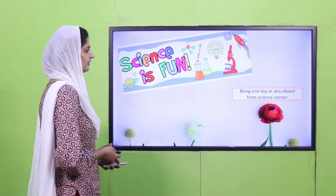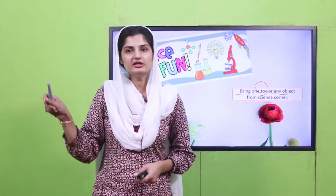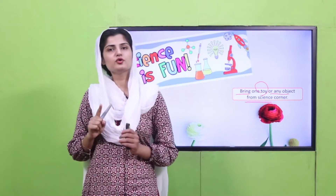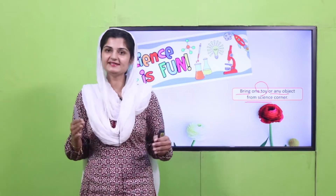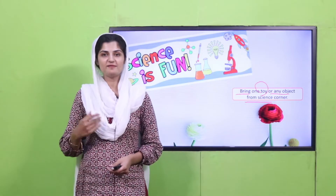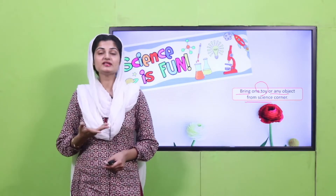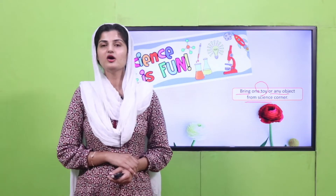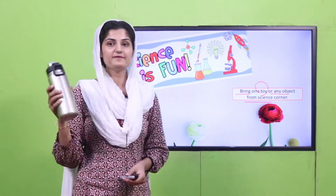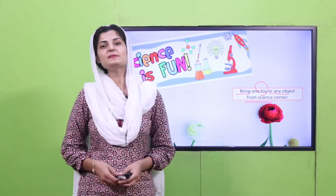It's fun time and we're going to have fun in the science corner. Your task is to bring one toy or any object from the science corner. Quickly run there and bring only one object — it can be a toy or any other thing. Okay playgroups, hopefully you have brought back the object or toy from the science corner. Now show this object to your peer or your teacher. I have brought a water bottle from the science corner — share your findings with your peers.